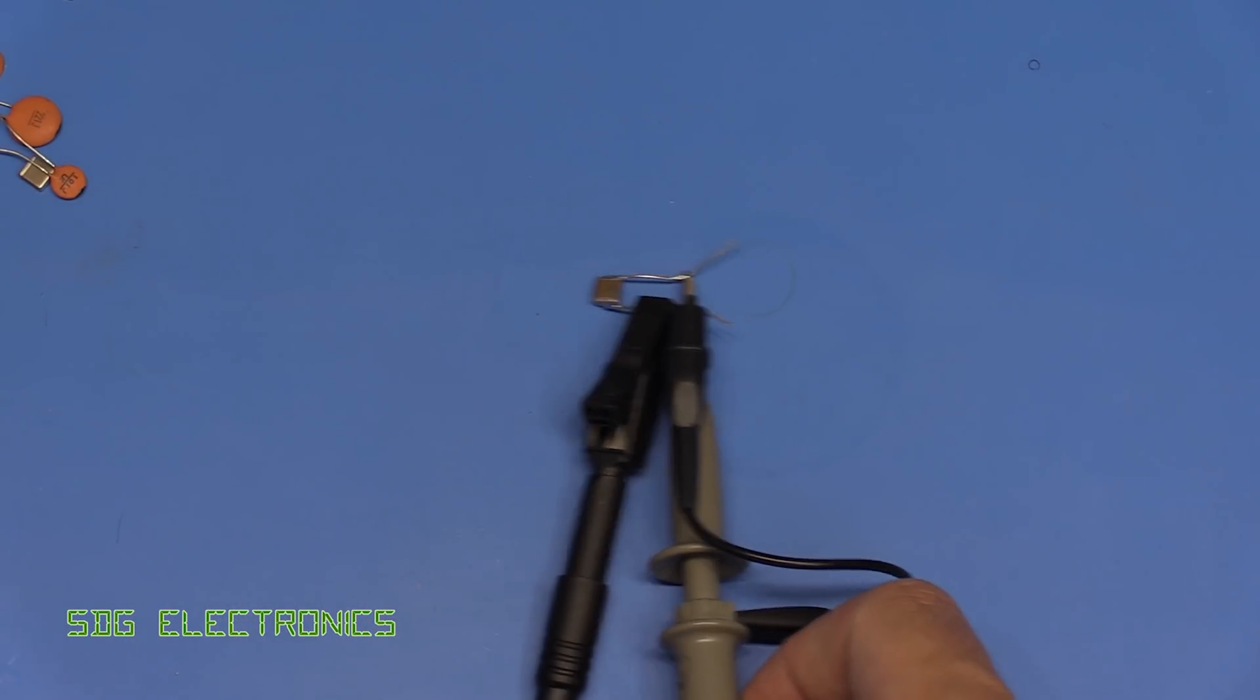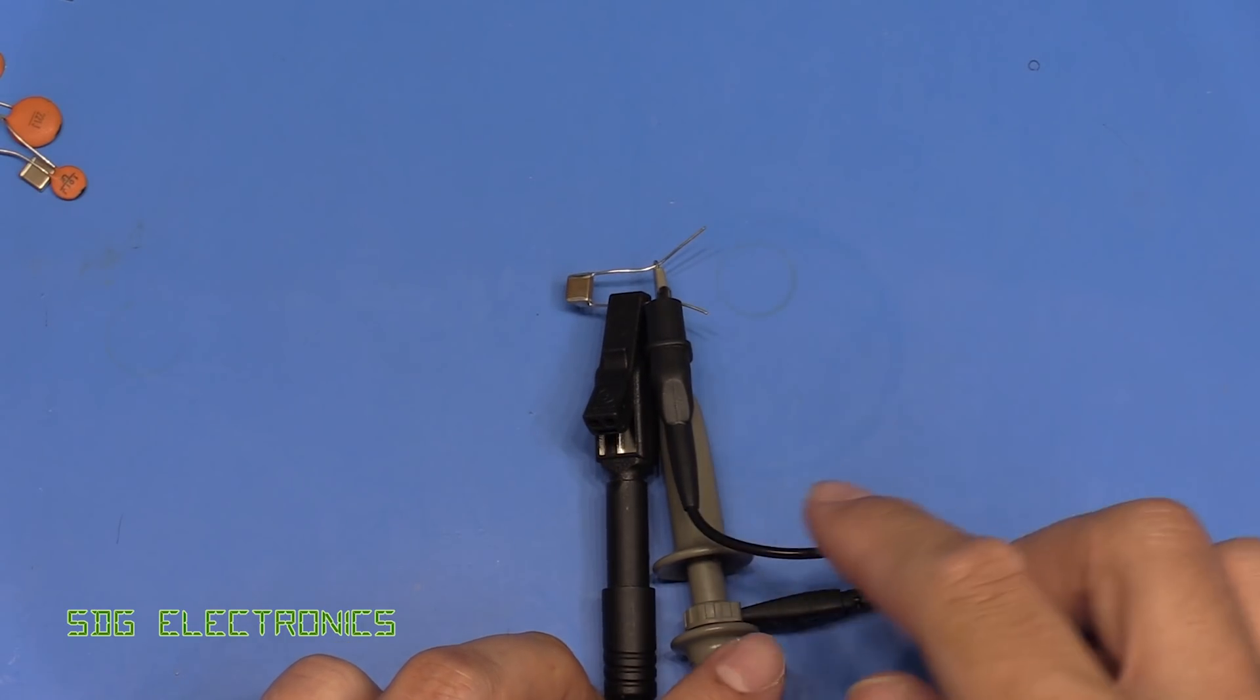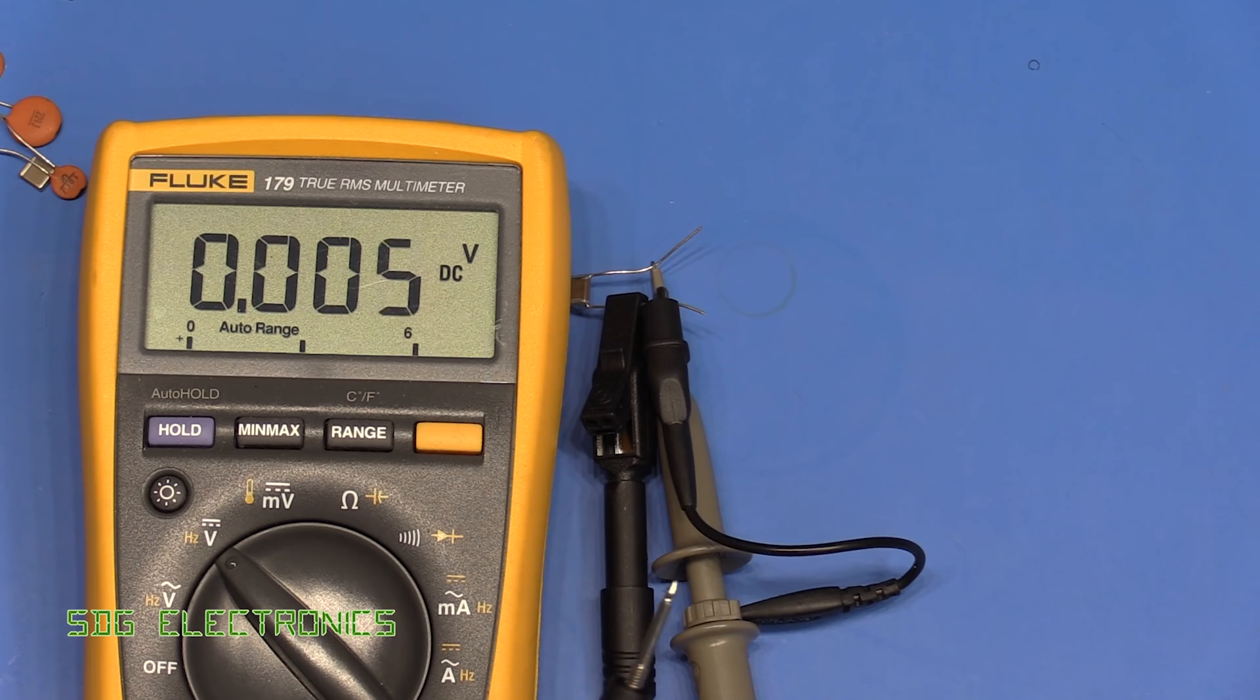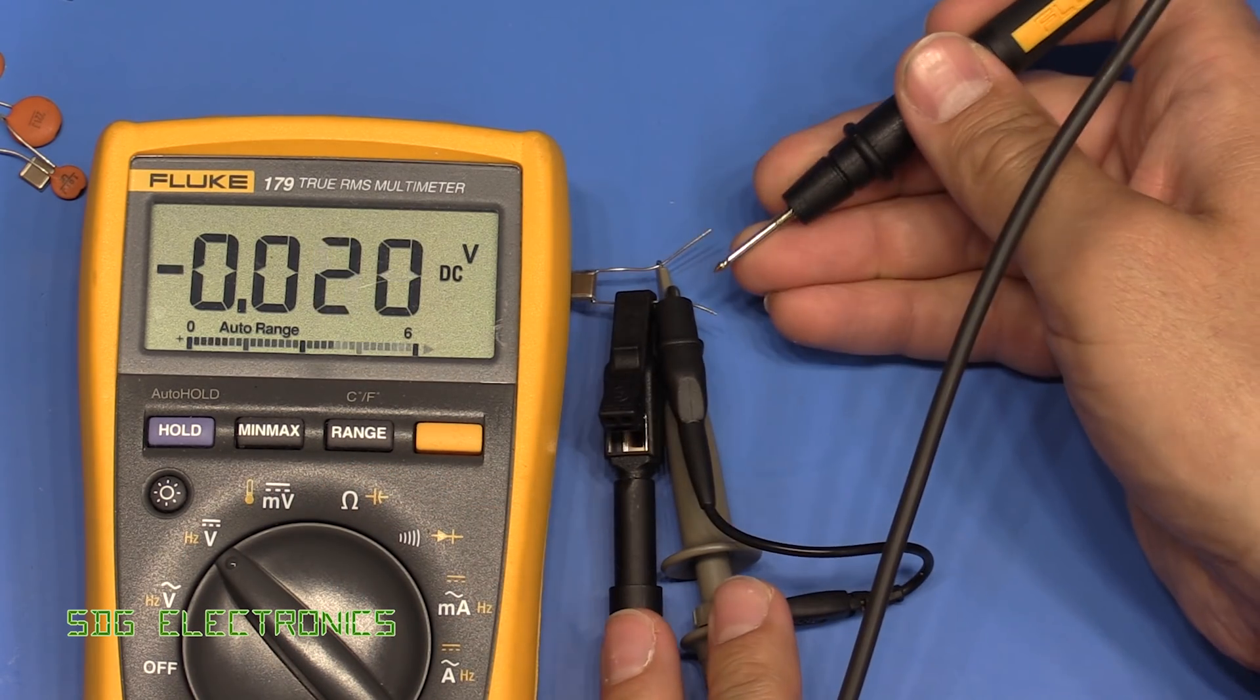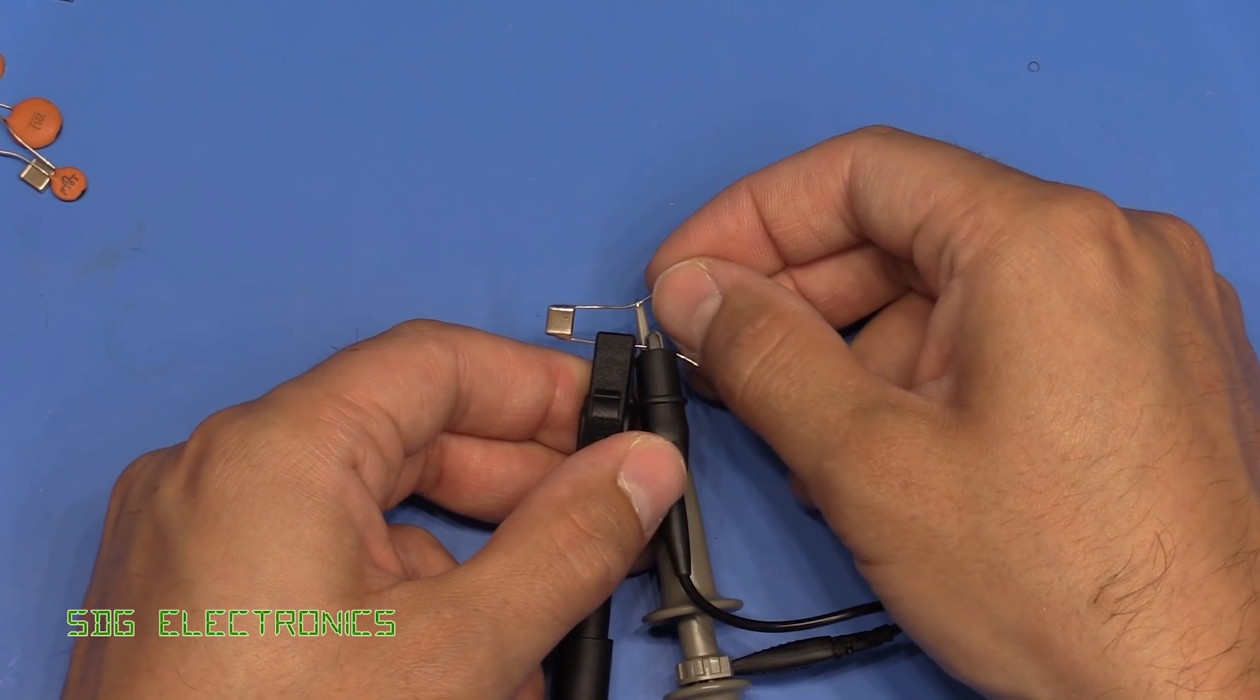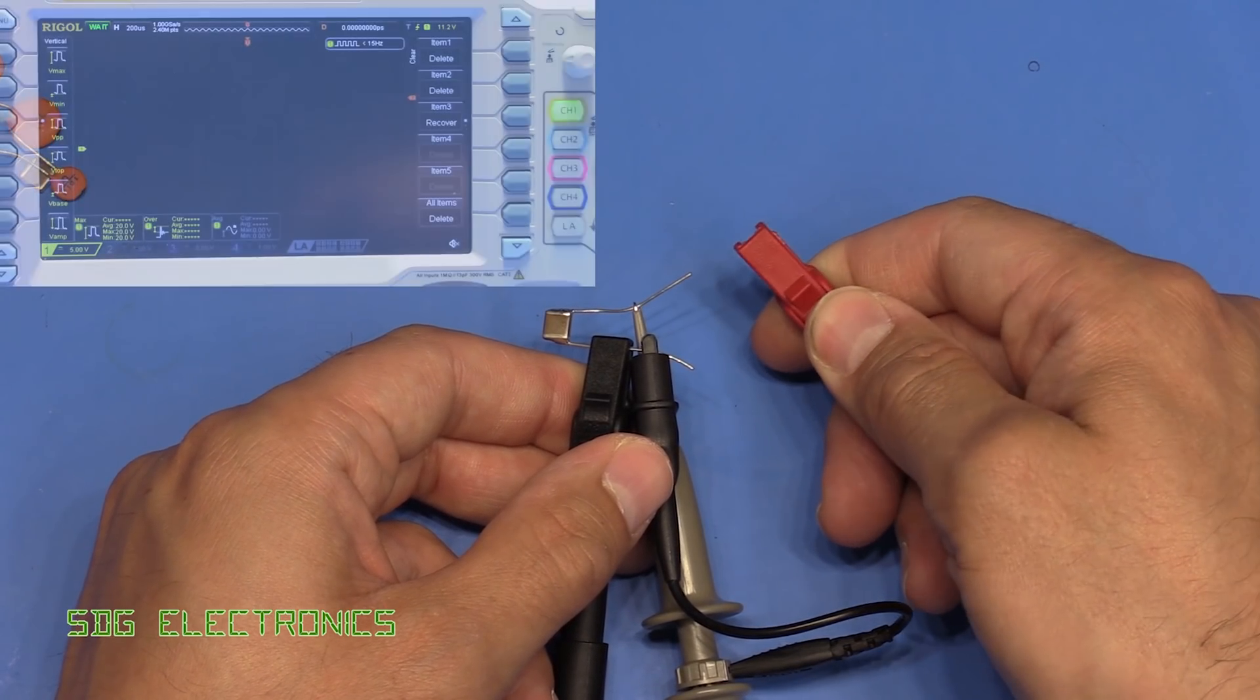I've got a 22 microfarad ceramic capacitor and my bench power supply set up. I've got the other lead here. This is set to around 12 volts. All we're going to do is measure the voltage across the ceramic capacitor as we connect up the power. So here we go.